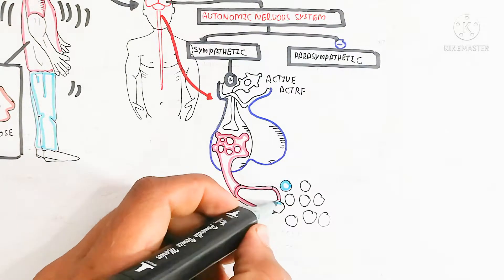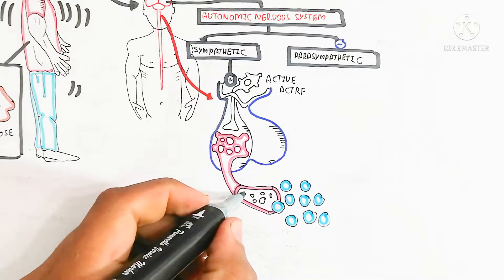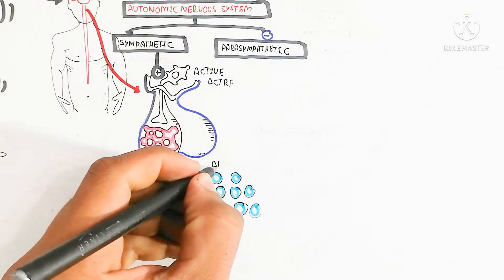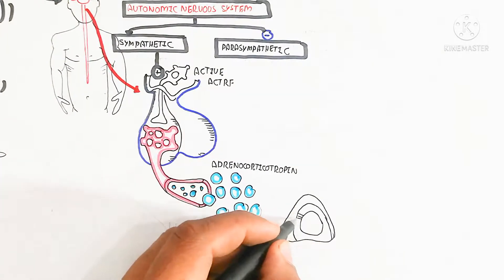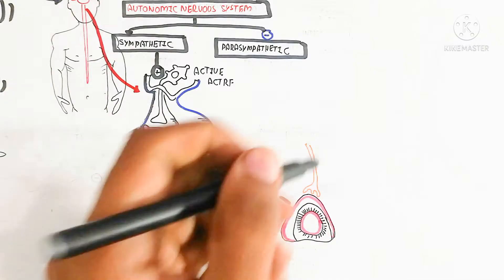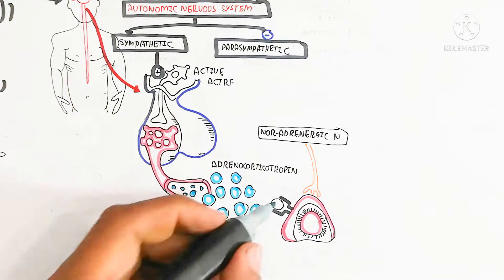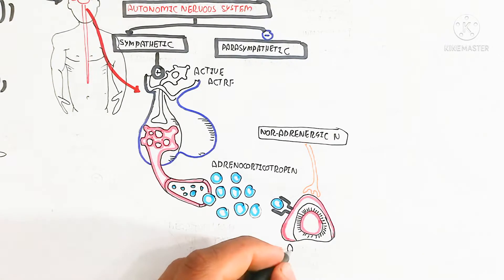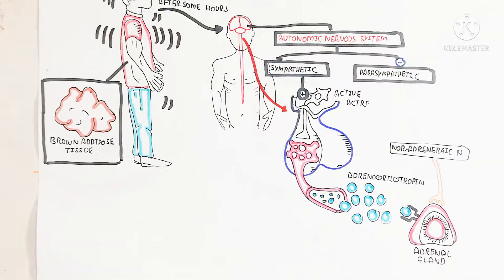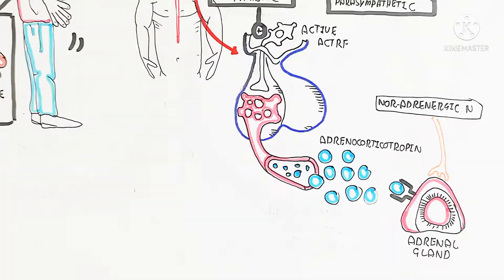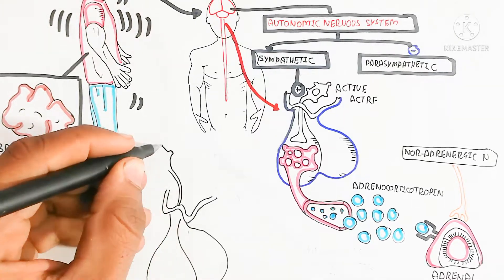Noradrenergic neurons also stimulate a quick response. ACTH binds with the adrenal gland to stimulate the production of norepinephrine hormone. This norepinephrine targets tissues, binding with them to provide a primary signal that converts to a secondary signal for heat production. The thyroid gland also plays an important role in thermogenesis.